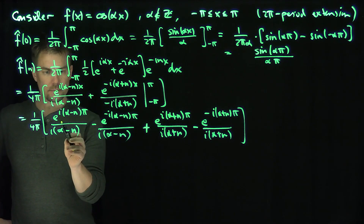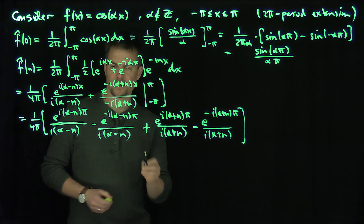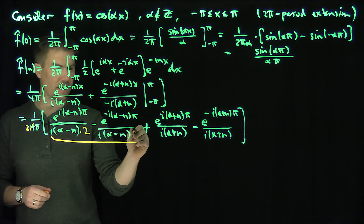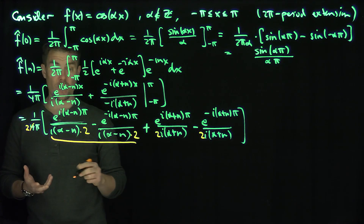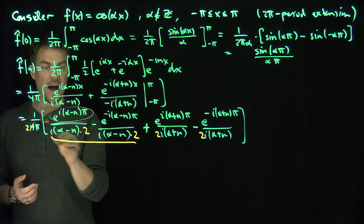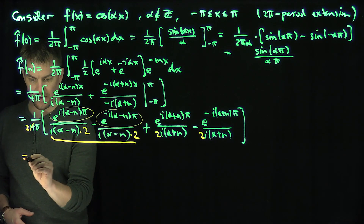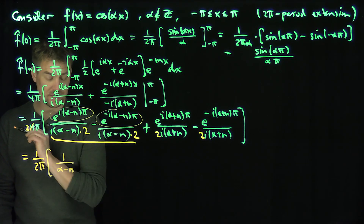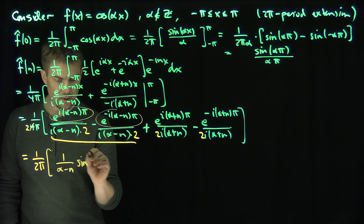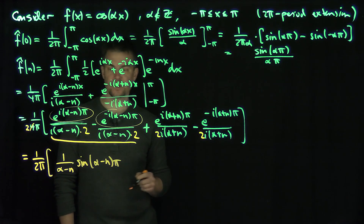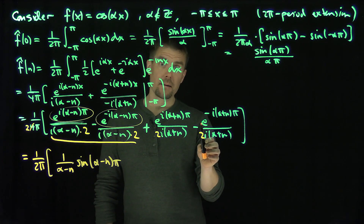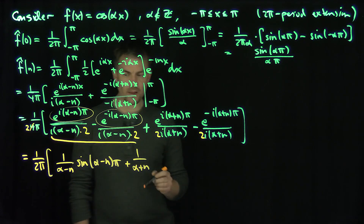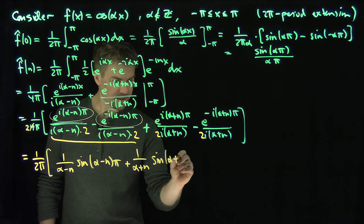Now, these first two terms — I'll take that factor of 4 and split it into 2 for each part. I have e^(i·something) minus e^(-i·something) over 2i, which is exactly a sine. So those first two terms equal 1 over 2π times sin((α-n)π) over (α-n). Likewise, the second pair gives sin((α+n)π) over (α+n).